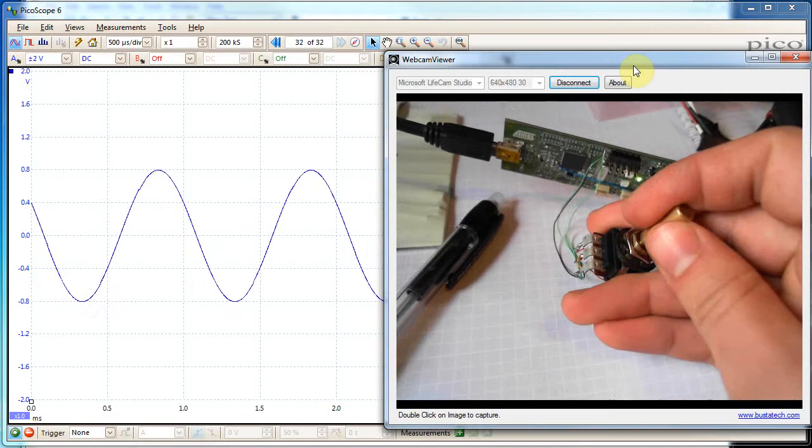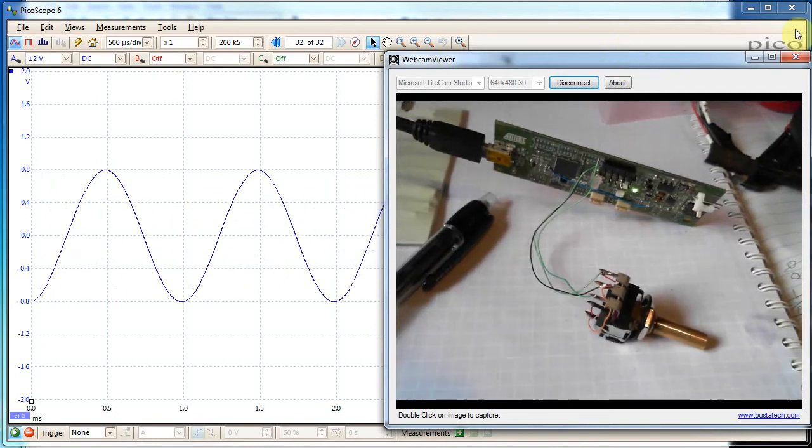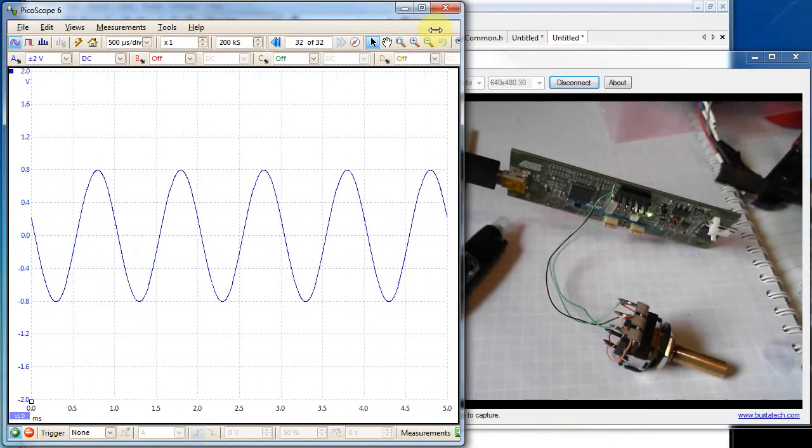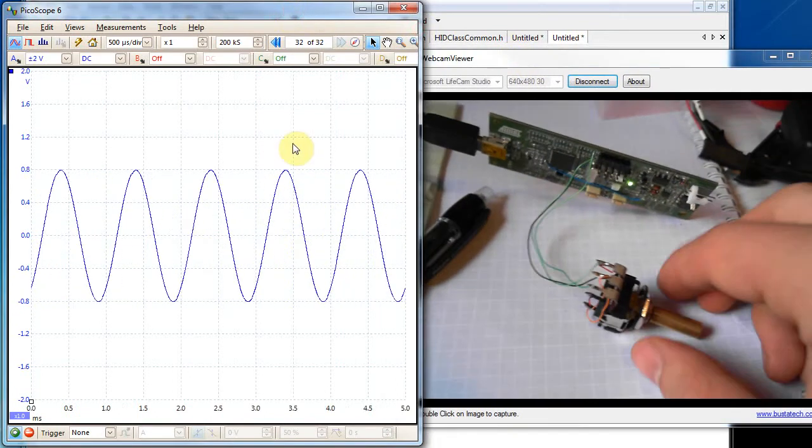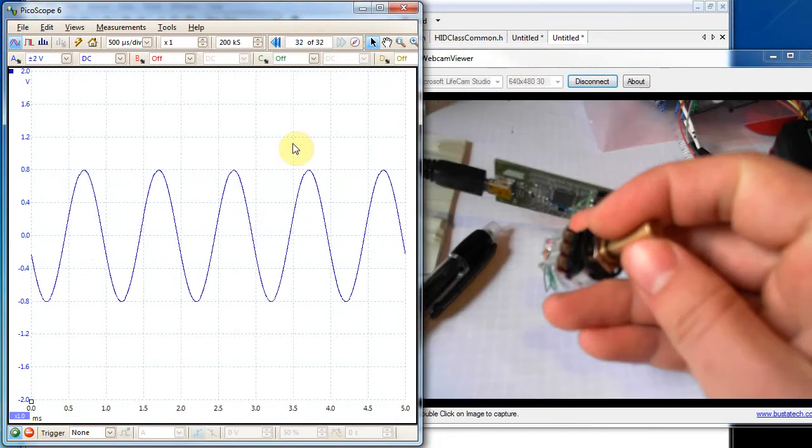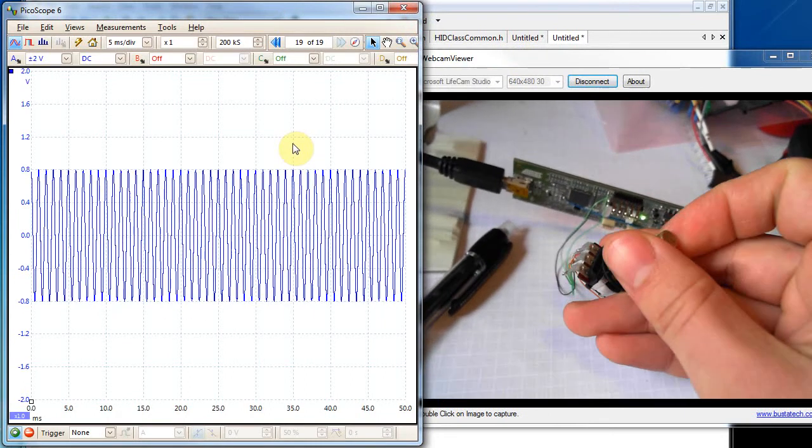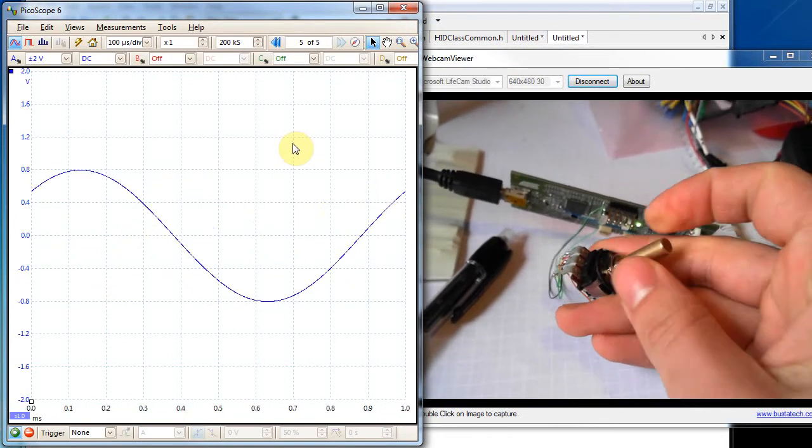and as I change the encoder, what you'll see is the timescale is changing there, so it's just like a real regular scope.